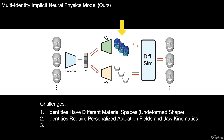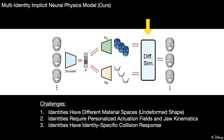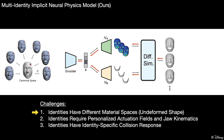We call these unique characteristics a person's style in our work. And thirdly, instead of resorting to learning collision-free results, we want to synthesize identity-specific collision response robustly. To solve the first challenge, we introduce a canonical material space for training and compute a spatial mapping from each identity space to the canonical space.